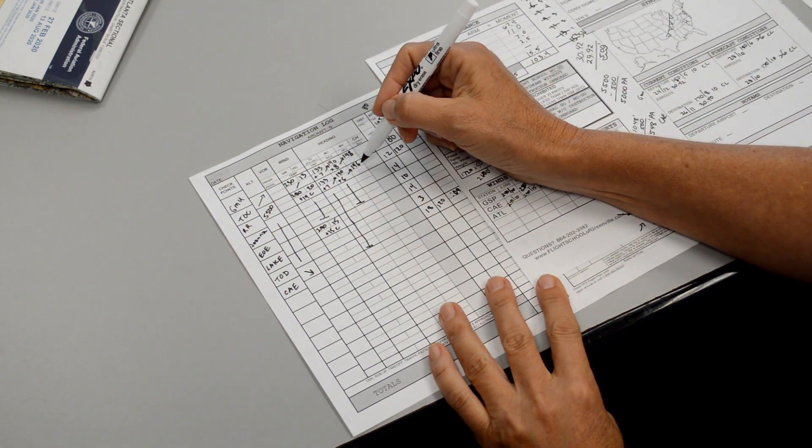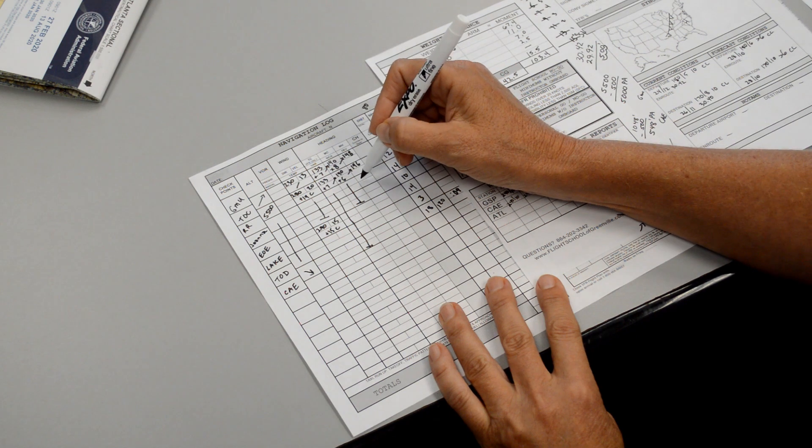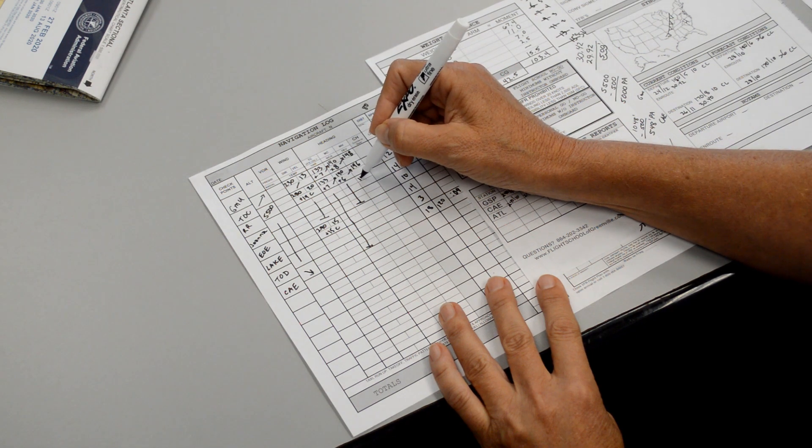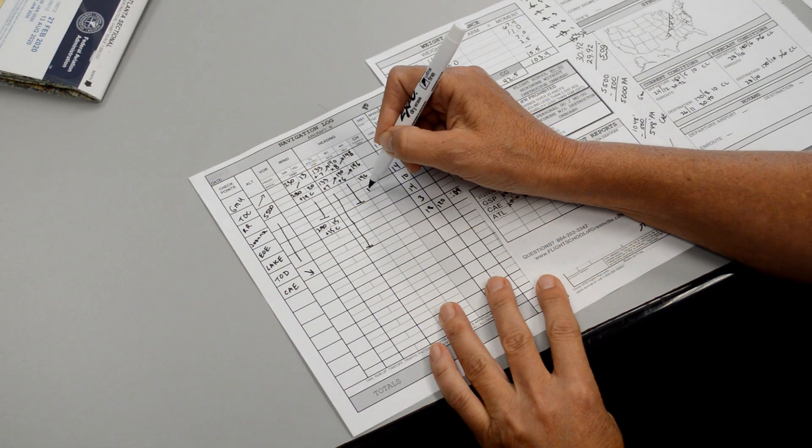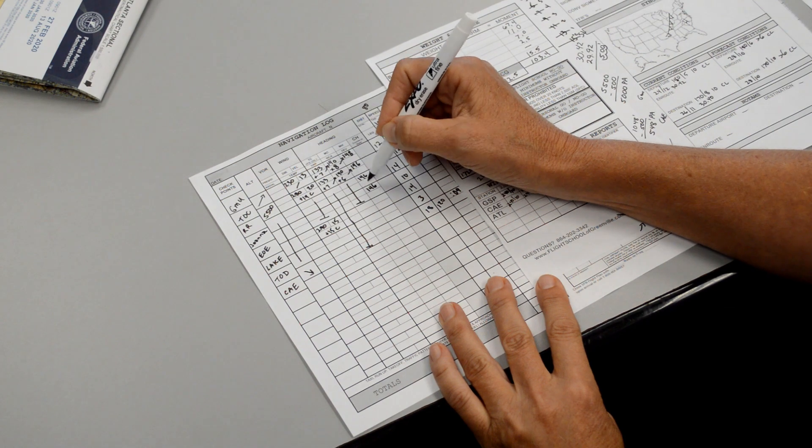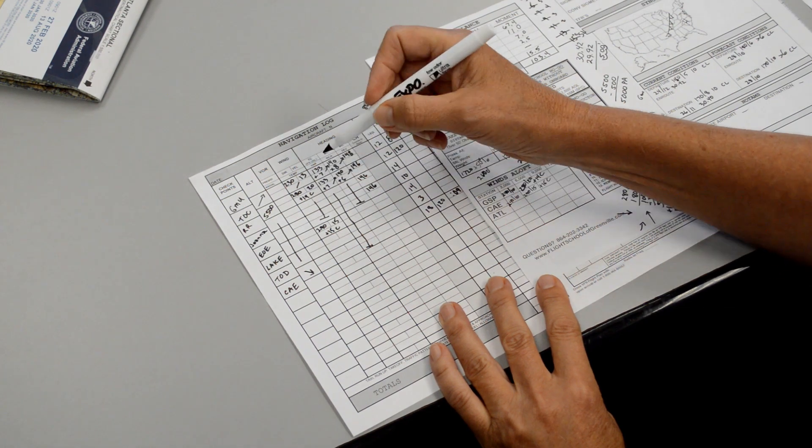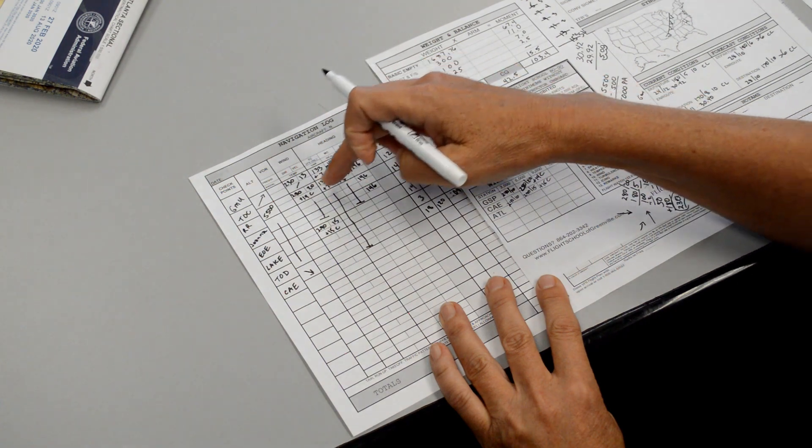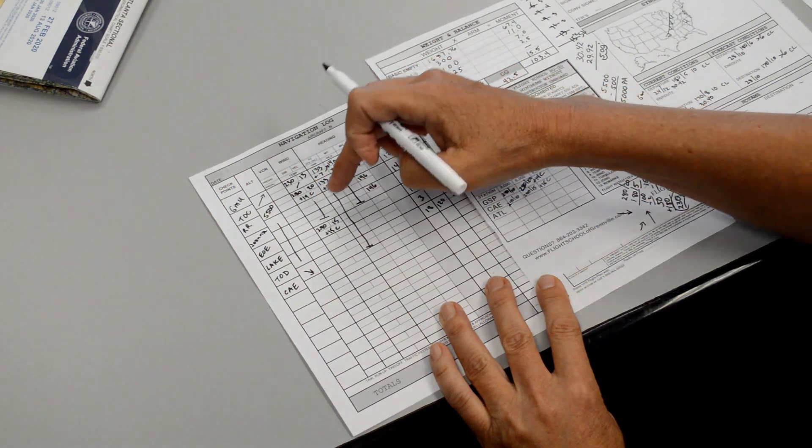Our magnetic heading will stay the same here. It'll still be 146 and 146. Because the winds during this duration of the flight plan are the same. So we just bring that down.